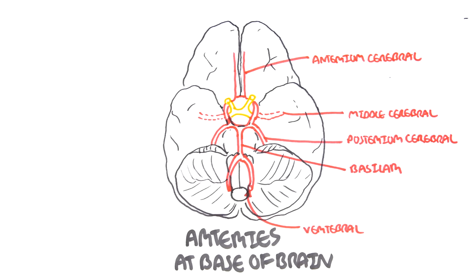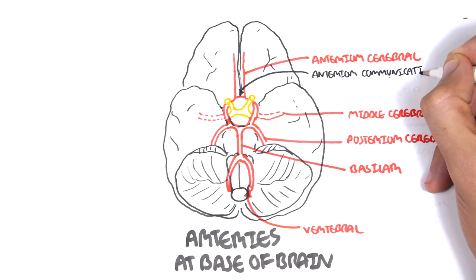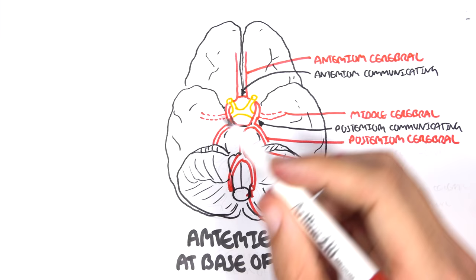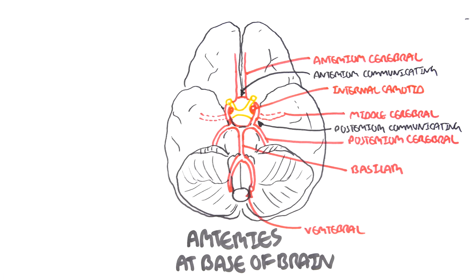Joining the anterior cerebral arteries is the anterior communicating artery, which communicates between the two anterior cerebral arteries. Joining the middle and posterior cerebral arteries is the posterior communicating artery. Two other important arteries that help form the circle of Willis are the internal carotid arteries, which are branches of the common carotid artery. The middle cerebral artery is actually a branch of the internal carotid, which does not give off any branches during its course from the chest to the brain.